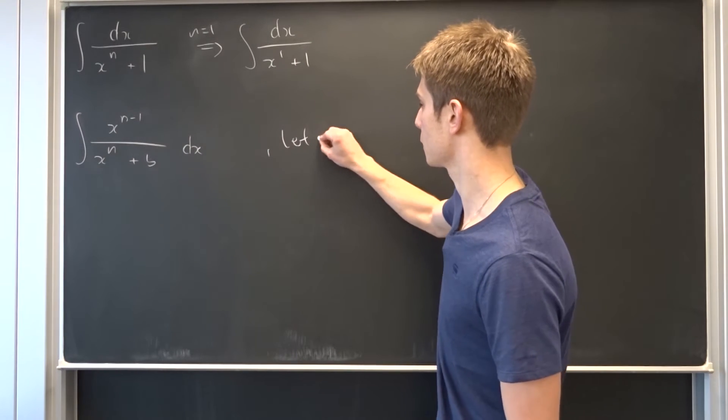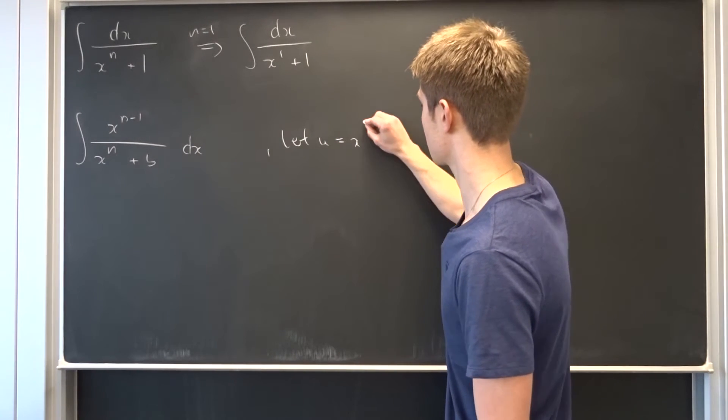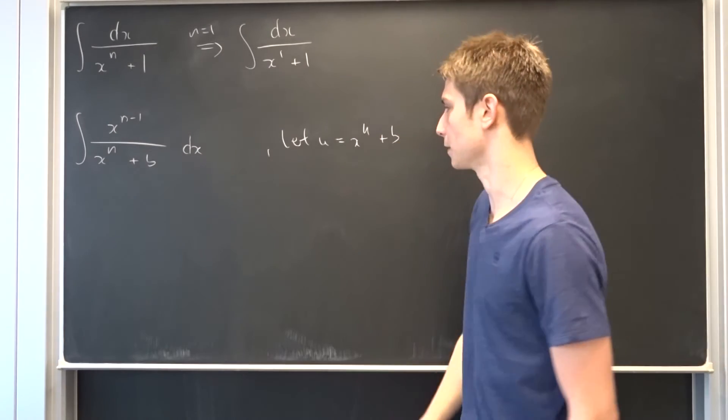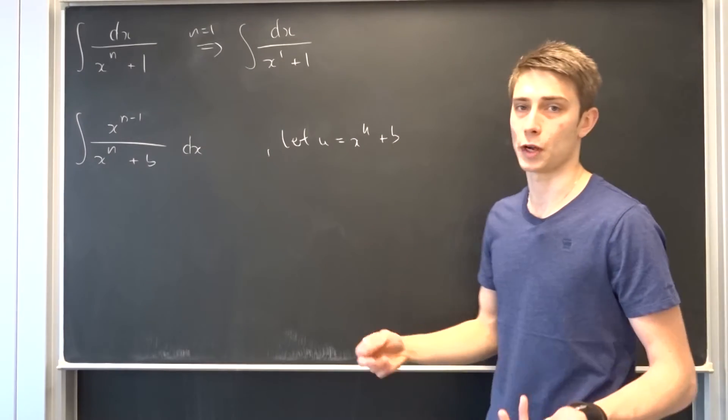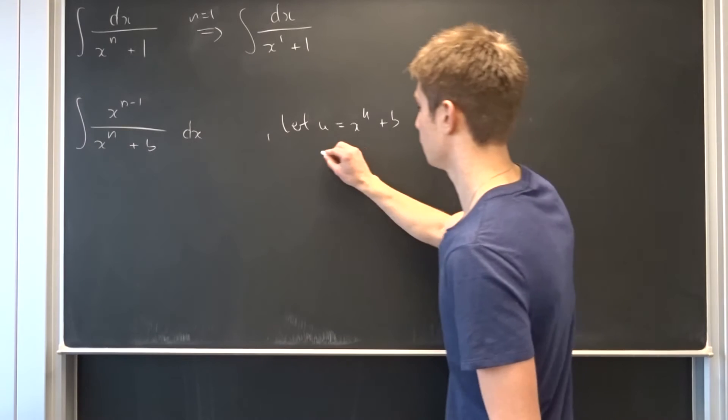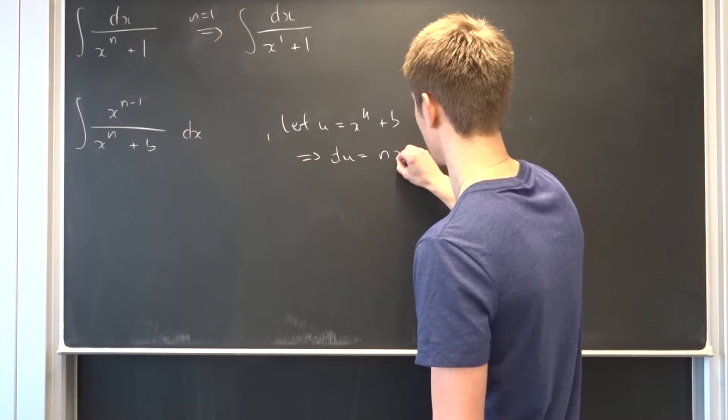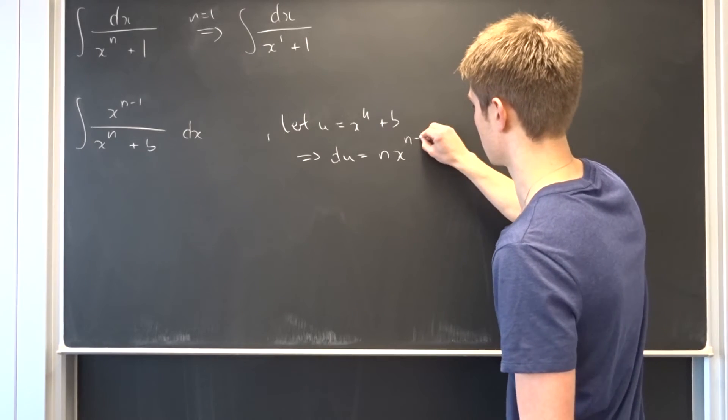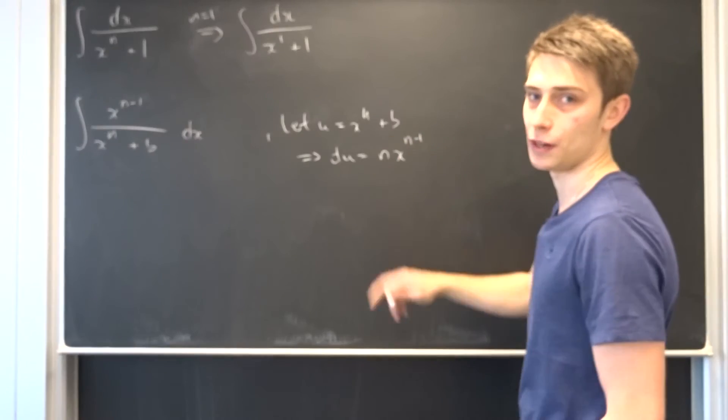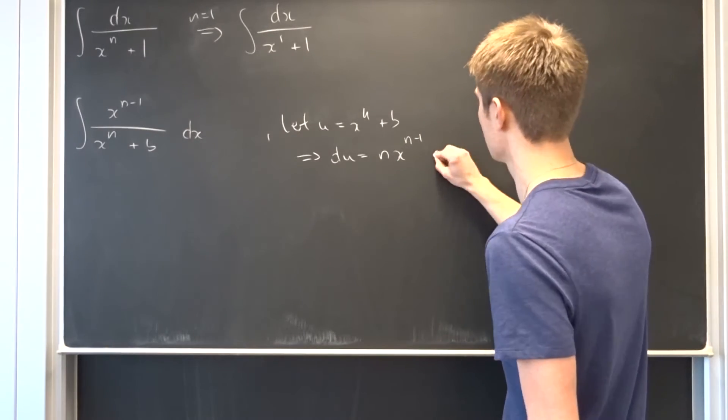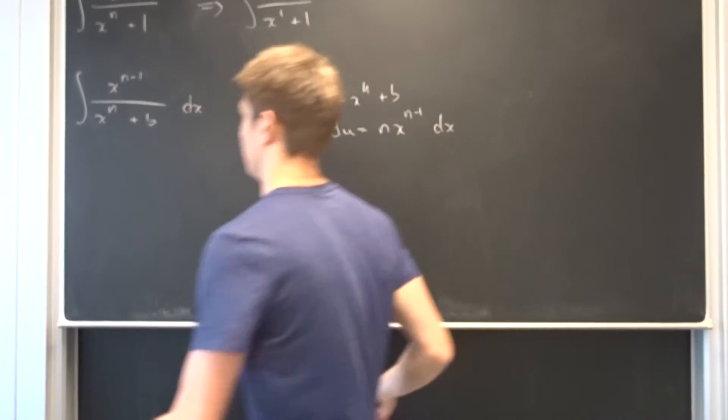Let some u equal to x to the nth power plus B. Now we have to differentiate so that we get our dx. So that would mean that du equals to n times x to the n minus 1 power, and B vanishes because it's just a constant, times dx. And now we can plug everything in.